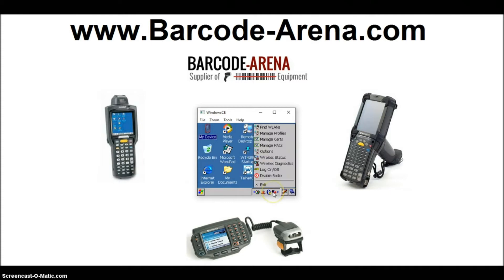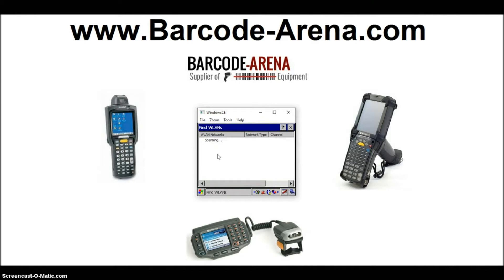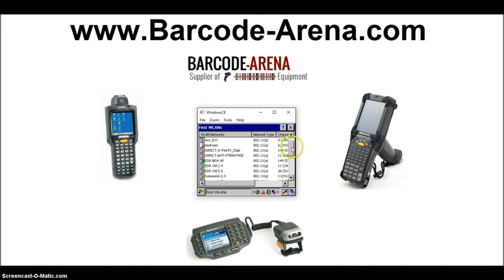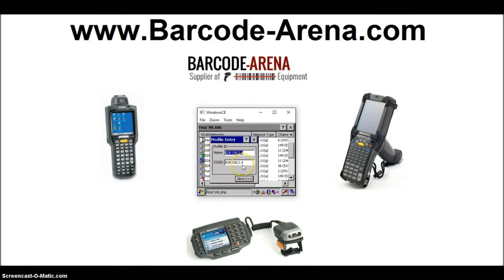Click your Wi-Fi radio again and click Find WLANs. It's going to pull up your Wi-Fi networks in range. When you find your network, tap it to highlight it, then hold your stylus over it a second time to right-click it and click Connect.